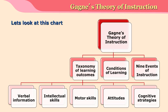Gagné's theory of instruction has three major components: taxonomy of learning outcomes, specific learning conditions required for the attainment of each outcome, and the nine events of instruction.